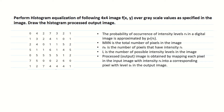The first point: the probability of occurrence of intensity levels RK is approximated by PR(RK) = NK / (M×N), where M is the number of rows and N is the number of columns, so M×N is the total number of pixels. NK is the number of pixels that have intensity RK, and L is the number of possible intensity levels. The processed output image is obtained by mapping each pixel with intensity RK to a corresponding pixel with level SK.